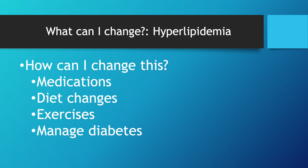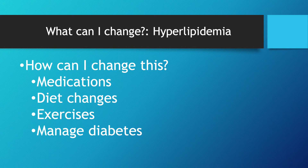Our first modifiable risk factor is hyperlipidemia, or high cholesterol. How can we help a patient with this? We can tell them to take their medications — things like statins, fibric acid derivatives — that are going to help lower lipid levels. We can also tell them to make diet changes: decreasing the fats in their diet, a more balanced diet, low sodium diet, just trying to decrease that fat accumulation happening in their blood vessels.